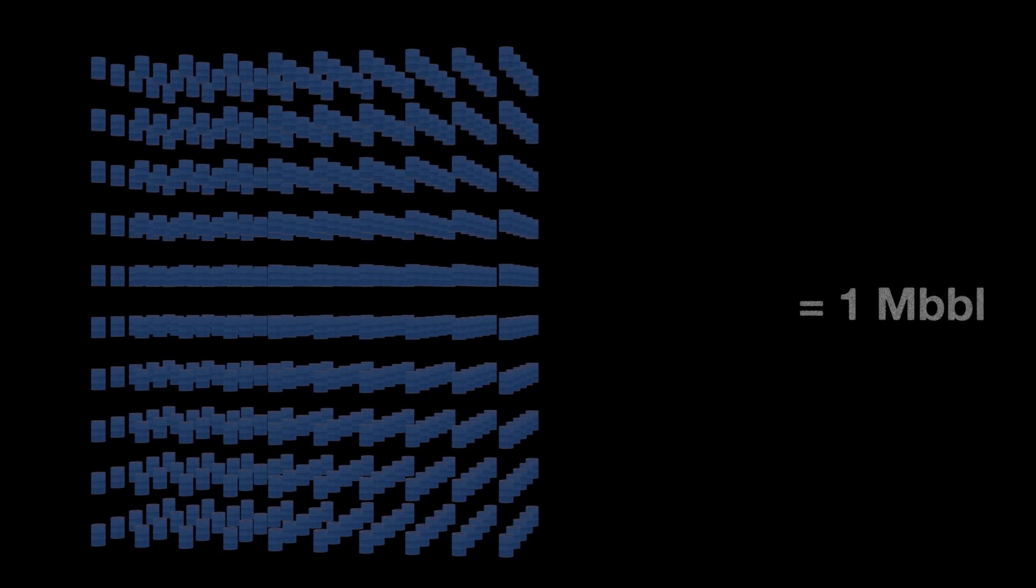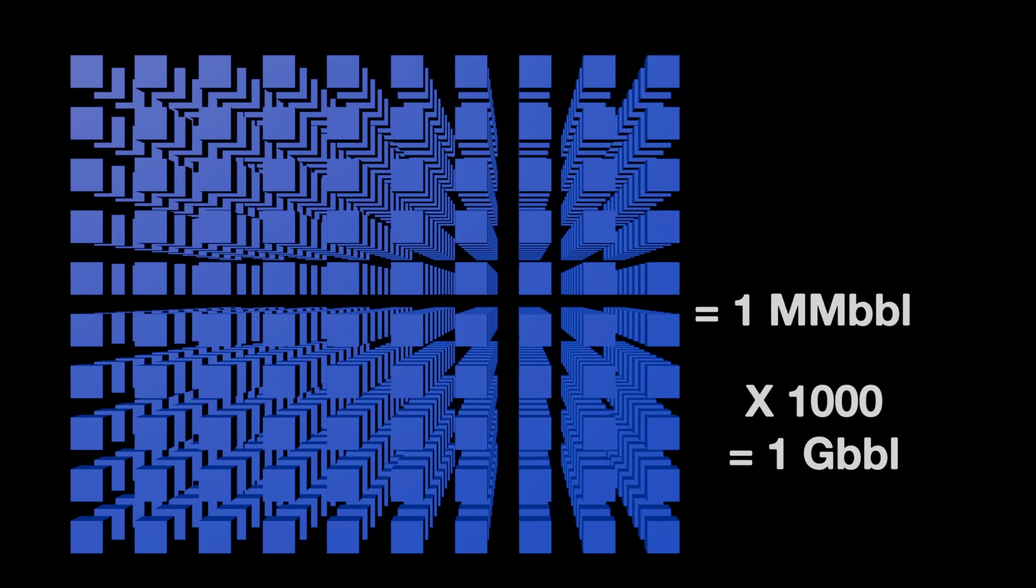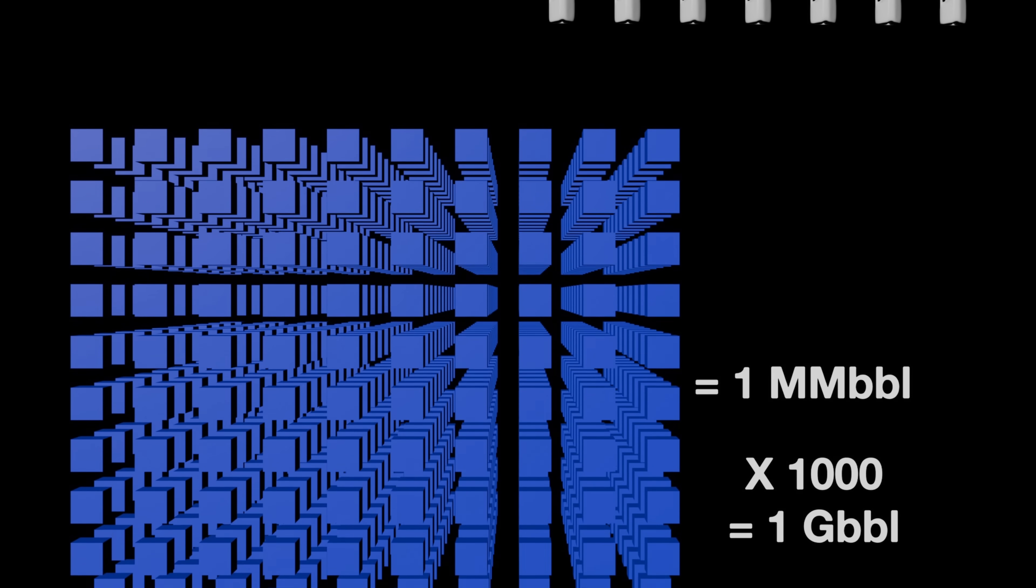What do you think the abbreviation for a thousand barrels is? K-B-B-L? No, it's M. An antiquated form of writing a thousand in Latin. A million is M-M. And a billion is G-B-B-L, short for giga. Oh, we switched back to Greek there, huh? Not even consistent with our classical languages, are we?